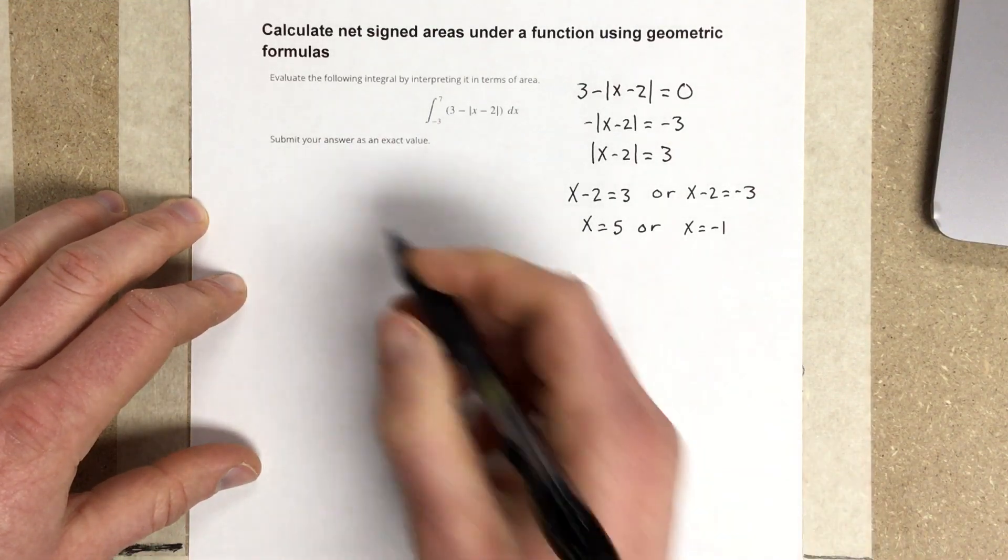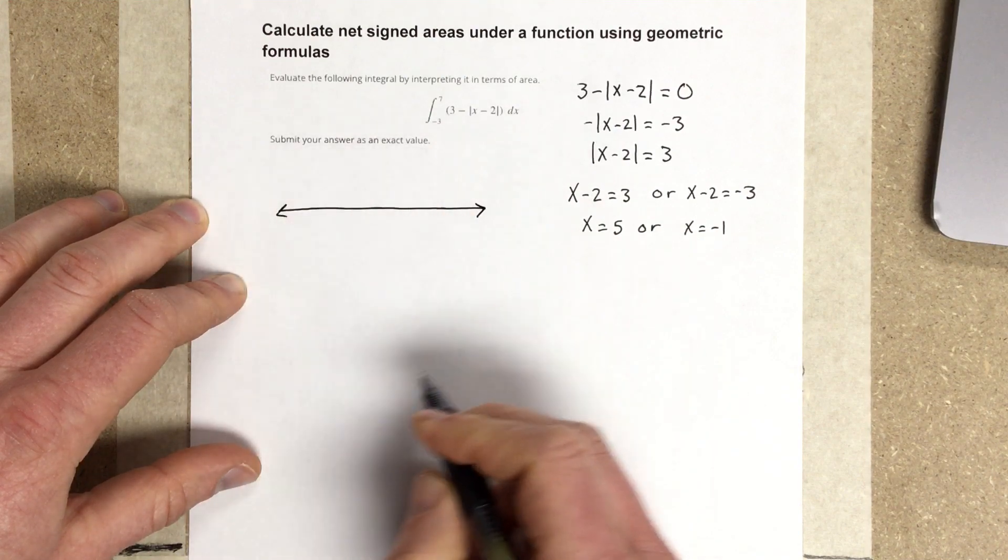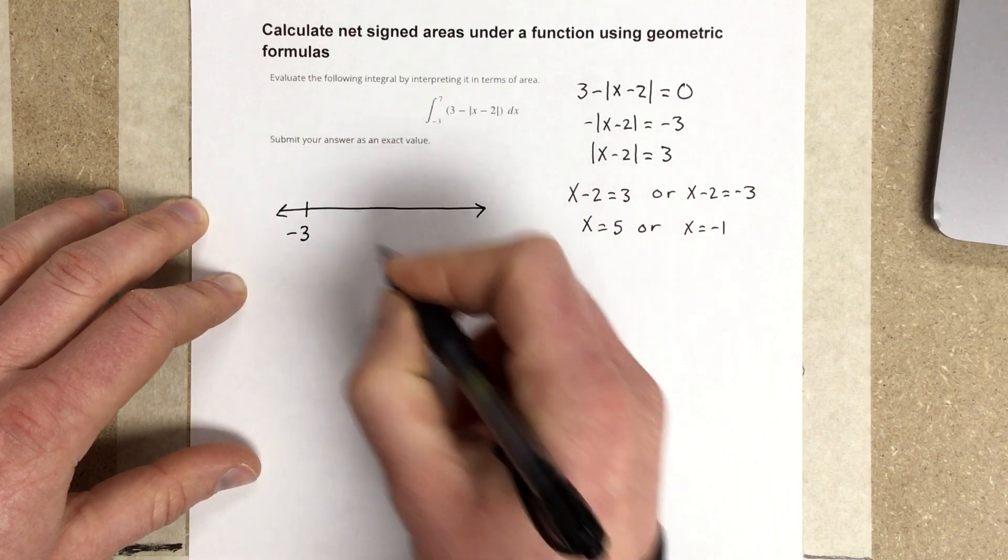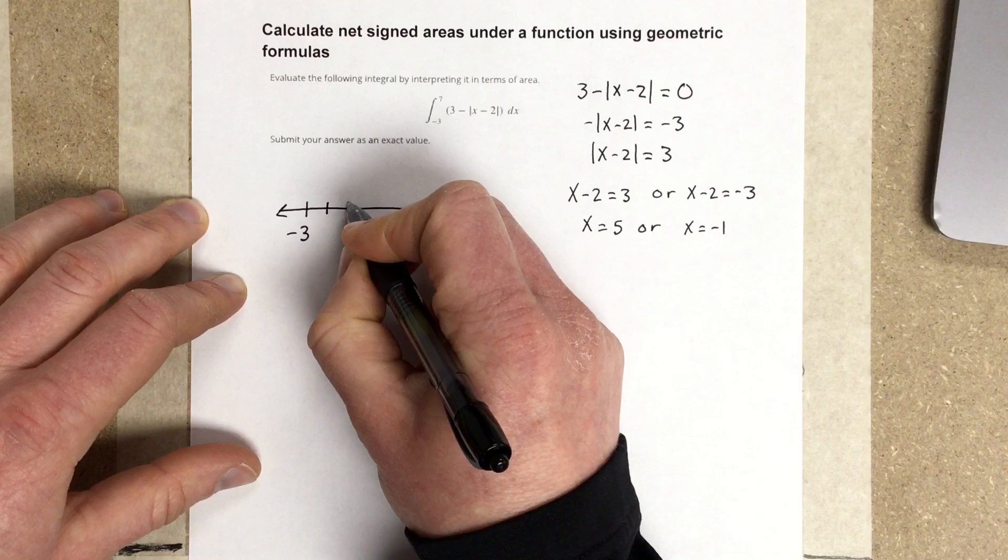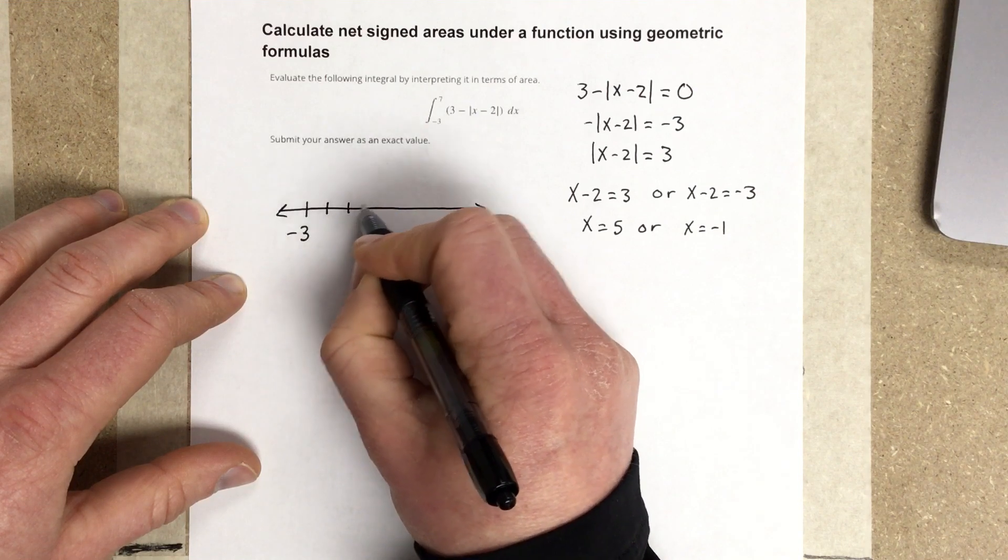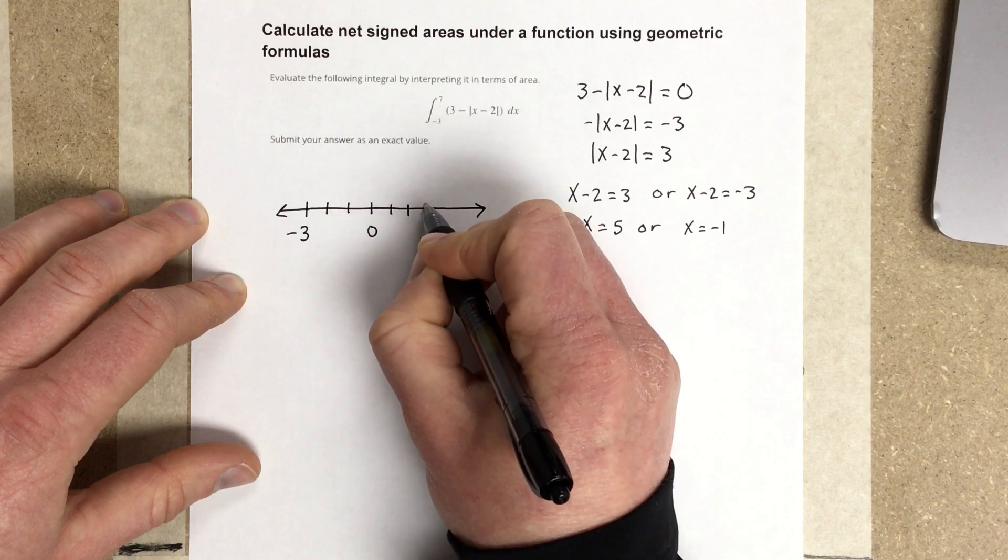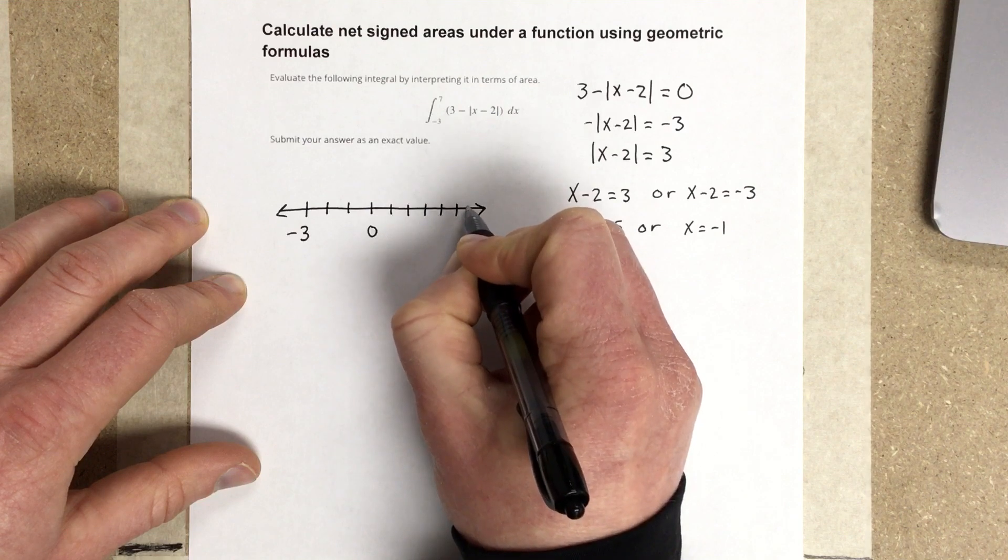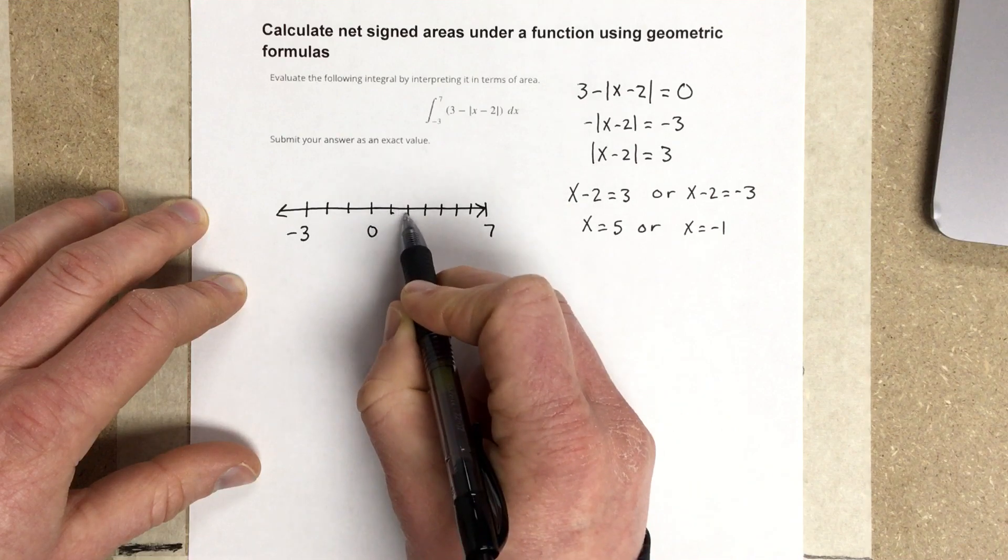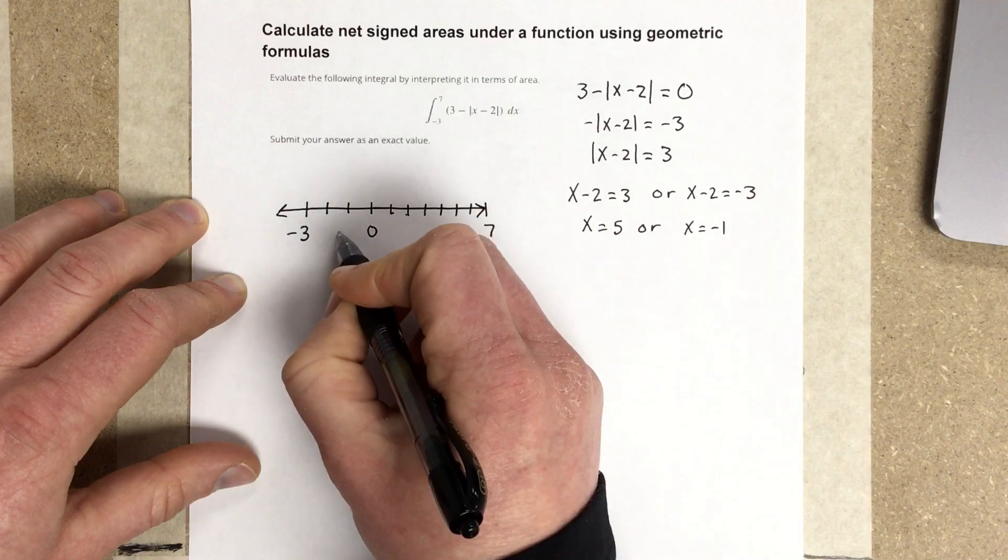So, this tells me if I think about this, and I draw a number line here. I'm going to be going from negative 3 all the way up to 7. So I'm going to write negative 3, negative 2, negative 1, 0, 1, 2, 3, 4, 5, 6, 7. This is 5 here. And, negative 1 would be here.